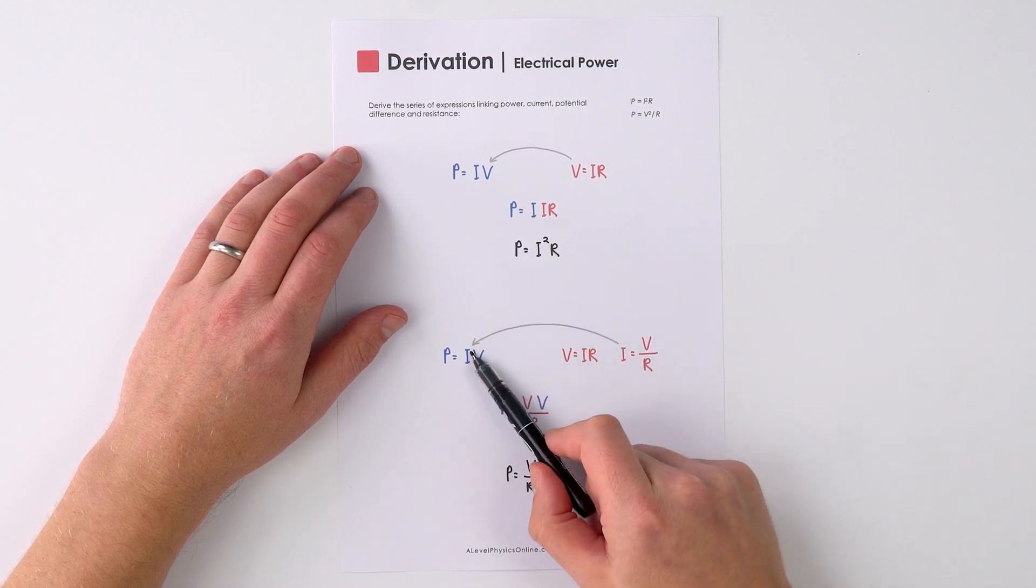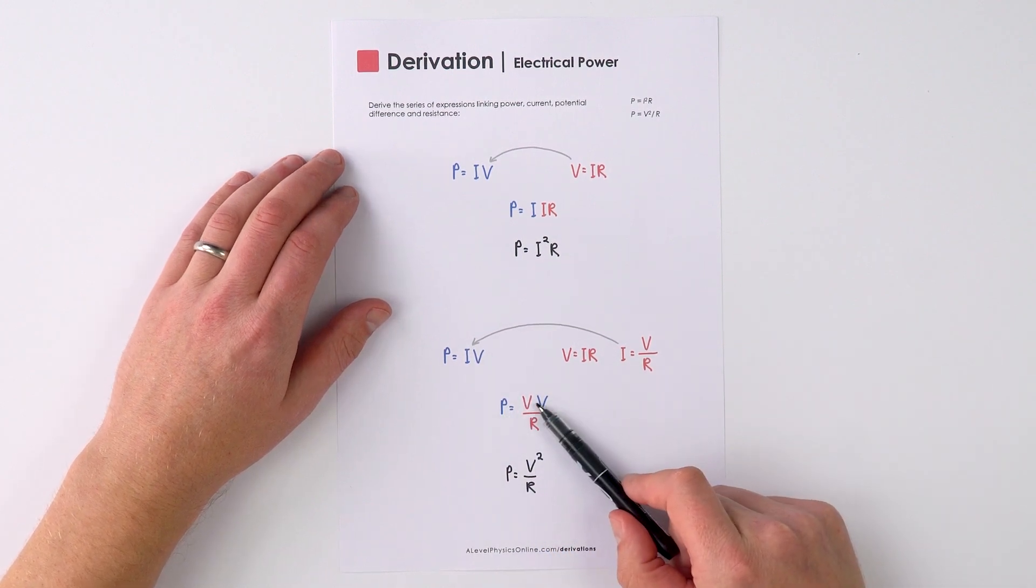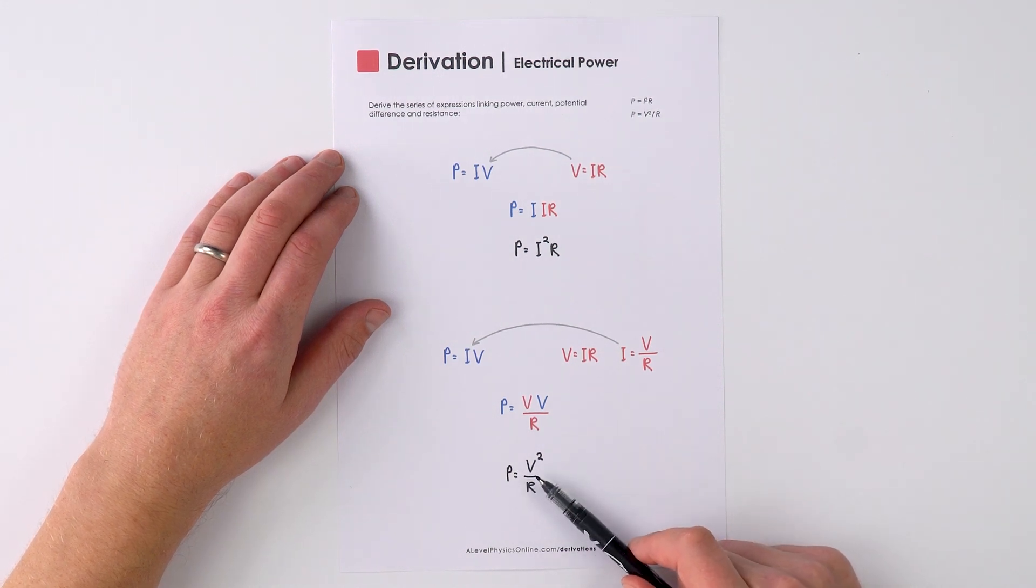We can substitute that back in on the left over here to say that the power is equal to the potential difference times the potential difference divided by the resistance, which is therefore equal to V squared over R.